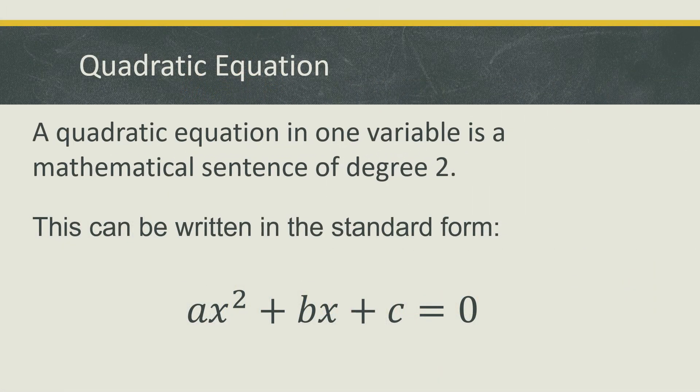Before we proceed to our lesson, let us review first the quadratic equation. A quadratic equation in one variable is a mathematical sentence of degree 2, or a second degree equation, where the highest exponent of the equation is 2. This equation can be written in standard form as ax squared plus bx plus c is equal to zero, where the a value, b value, and c value are all real numbers.